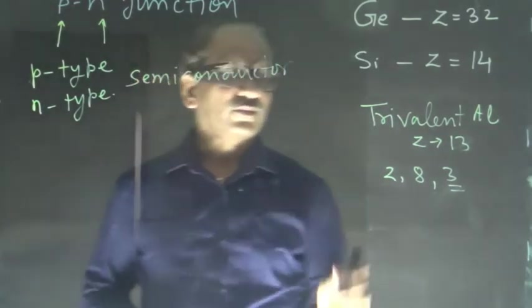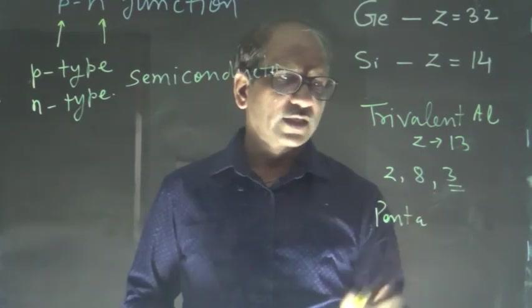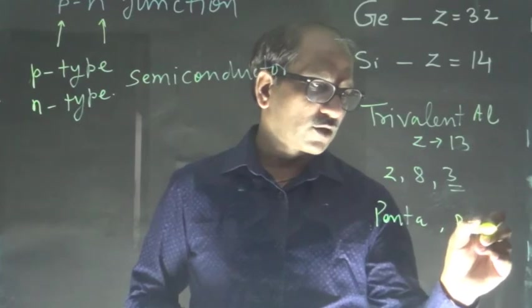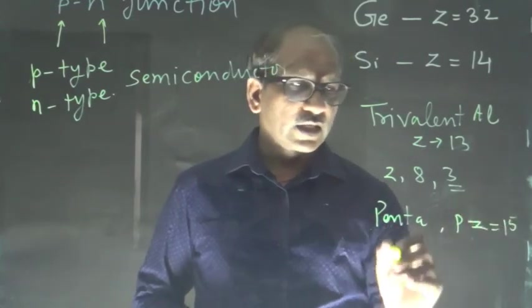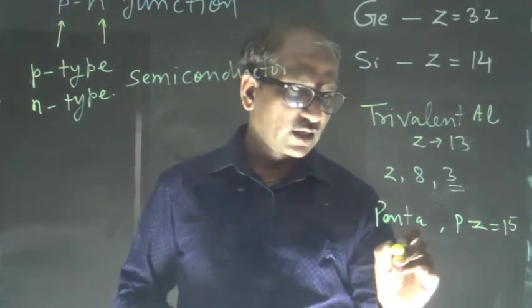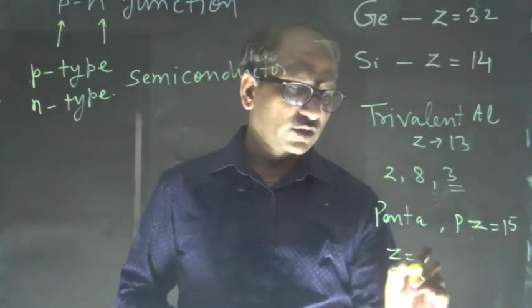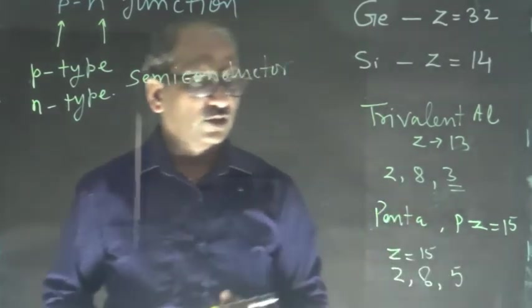And pentavalent impurity. Here I am taking phosphorus, where Z is equal to 15. And if I write the electronic configuration according to the shell, it will be 2, 8, and 5.